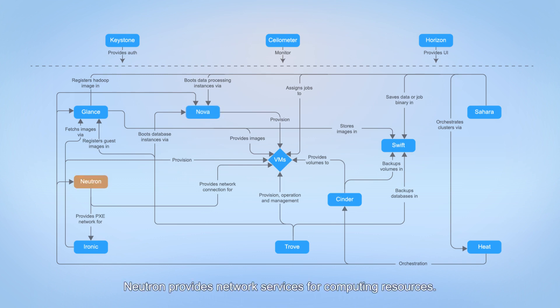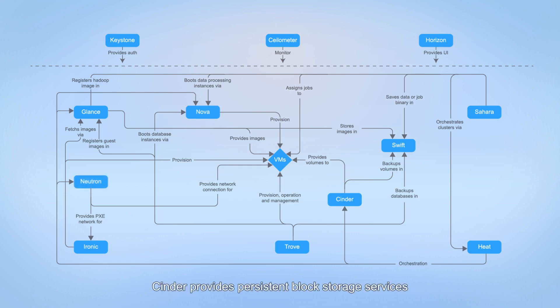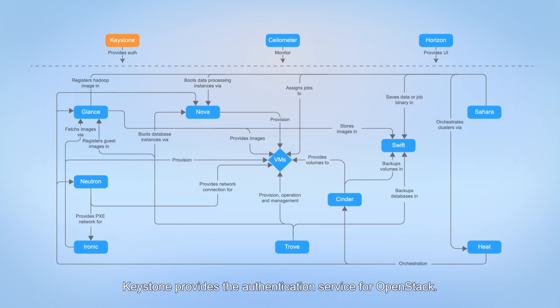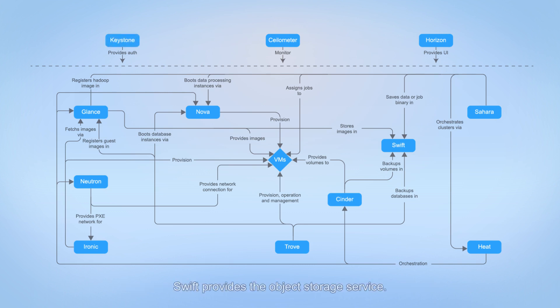Neutron provides network services for computing resources. Cinder provides persistent block storage services that provision resources on demand through unified interfaces for the cloud platform. Keystone provides the authentication service for OpenStack. Swift provides the object storage service.